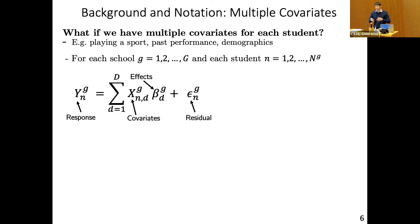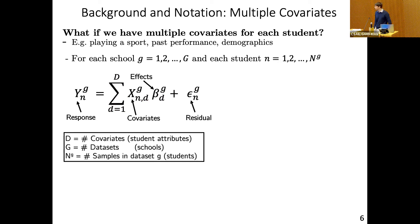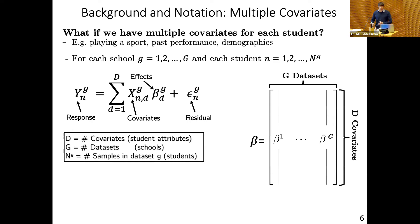Now although each of the individual pieces of this model are relatively simple, we've come into quite a lot of notation. To summarize: we now have d different covariates corresponding to the different student attributes, g data sets corresponding to the different schools, and n_g samples in each data set g corresponding to the number of students in that school. Altogether, since we have multiple effects in each of these multiple schools, we can think of the parameter we want to estimate as a big matrix beta containing g columns corresponding to the different data sets and d rows corresponding to the different covariates.